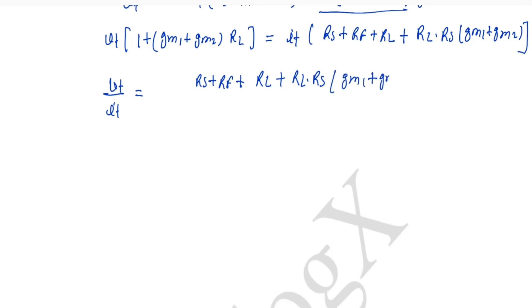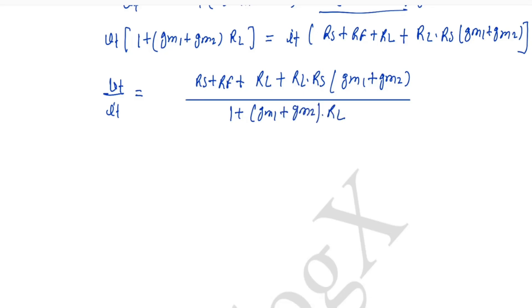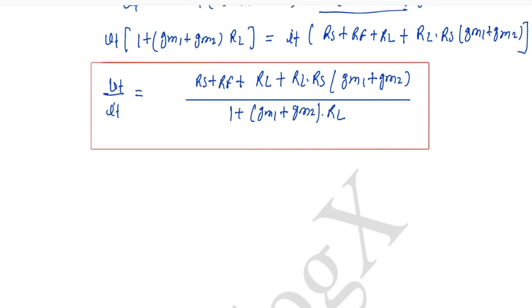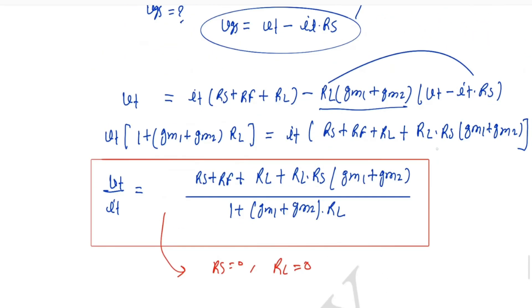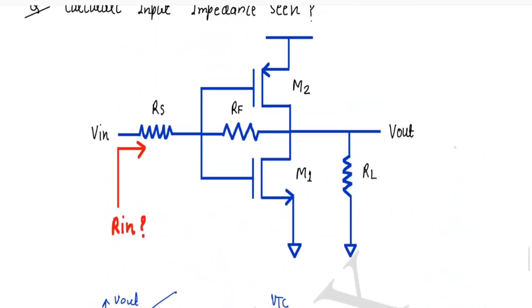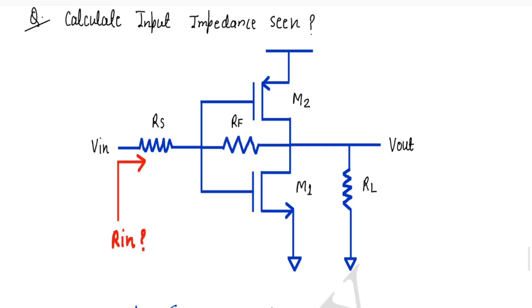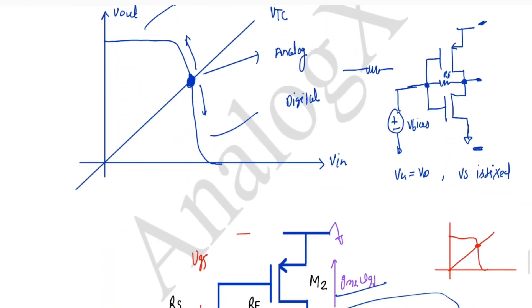Therefore the input resistance is: Rin = Vt/IT = [RS + RF + RL + RL·RS·(Gm1 + Gm2)] / [1 + (Gm1 + Gm2)·RL]. This is the generalized input impedance seen from the input side. You can apply special cases such as RS = 0 or RL = 0 to simplify. I hope this was clear — if you see any wrong equations or analysis, please let me know. Thank you and bye.